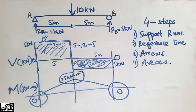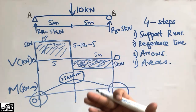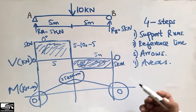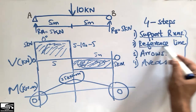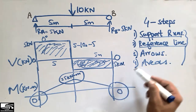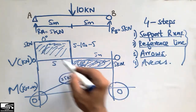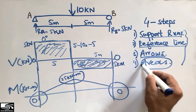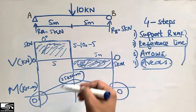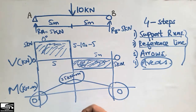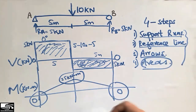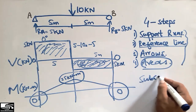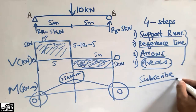You can find the bending moment and shear force diagram of any beam by following these four steps: first, find the support reactions; second, draw the reference line for shear force and bending moment; third, draw the arrows for the shear force; and fourth, calculate the areas from the shear force diagram to find the bending moment. Don't forget to subscribe our channel for more videos. Thank you for watching.